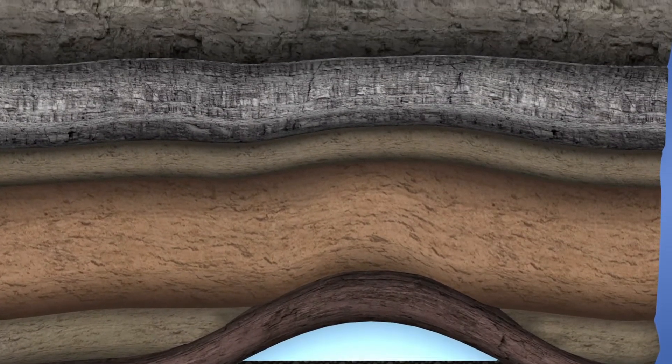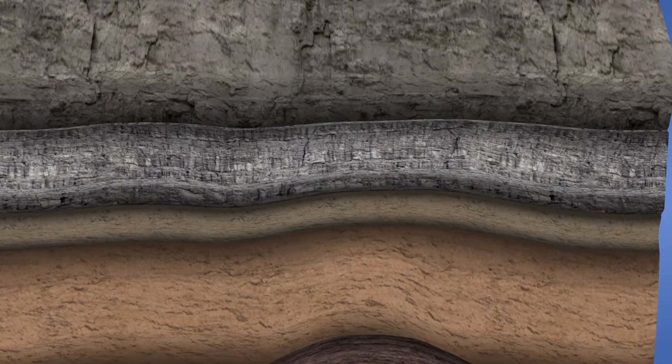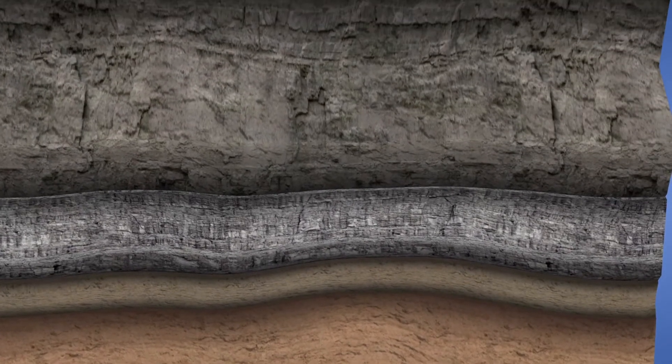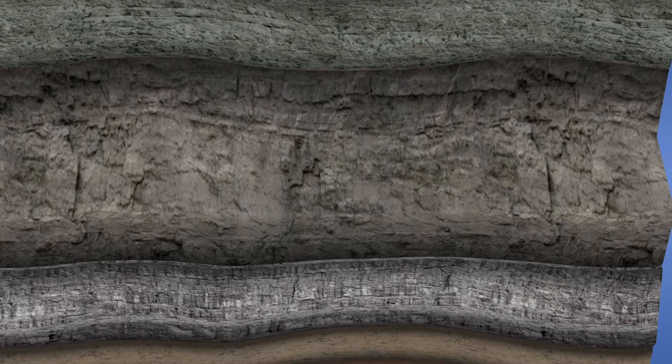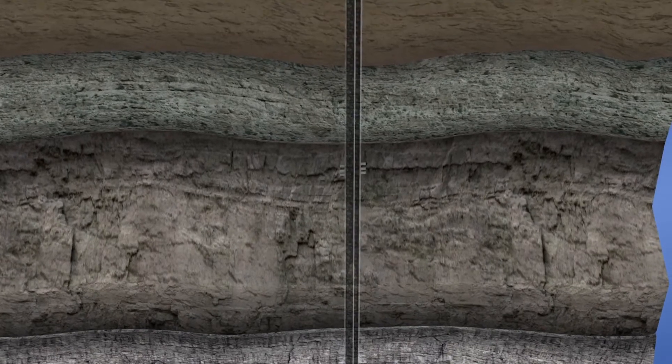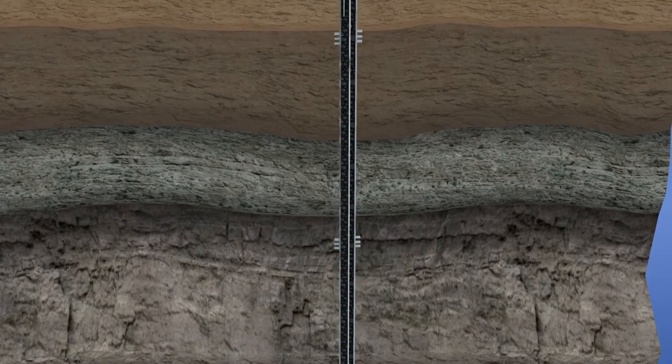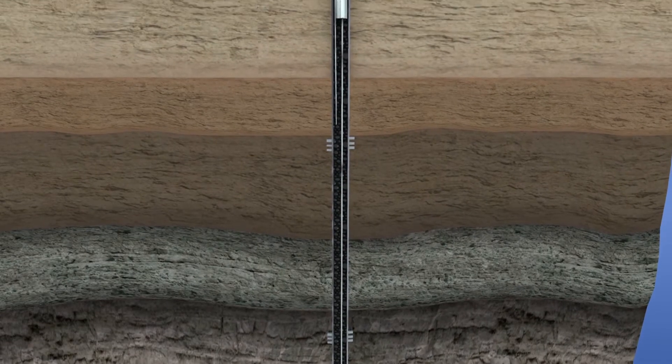The place where crude oil and natural gas accumulate is called a trap. The density of crude oil and natural gas is less than that of water, therefore water is found at the bottom of the trap, crude oil in the middle, and natural gas at the top.